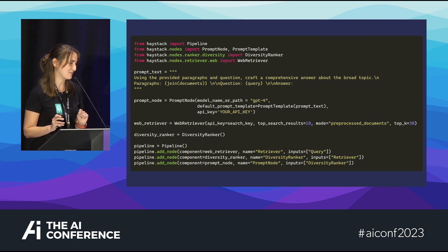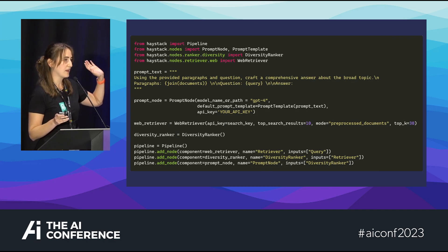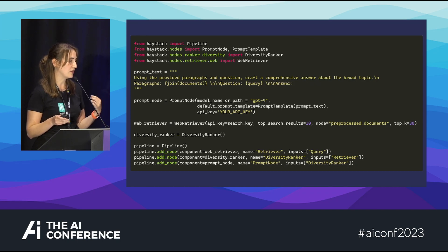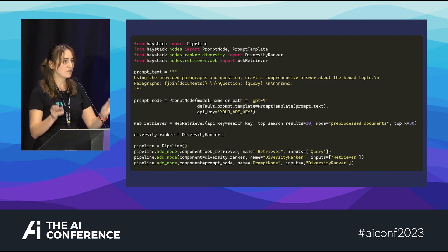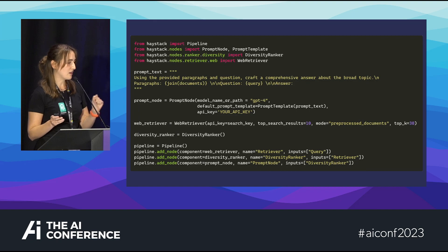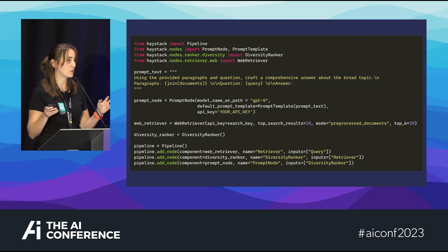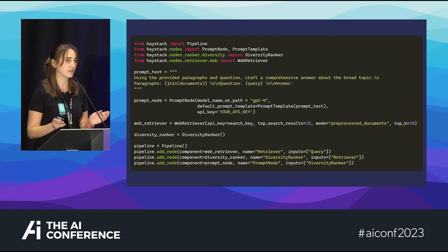This is the only code snippet I have. To use our diversity ranker in Haystack, you first initialize the various components. The prompt reads: using the provided paragraphs and question, craft a comprehensive answer about the broad topic — so we know we want a diverse set of documents. I've chosen GPT-4 via OpenAI directly for generation, and web search as the retrieval step — so whatever Google returns. Then I add a diversity ranker. In pipeline construction, the query first goes to the web retriever, then through the diversity ranker to reshuffle and ensure the LLM sees a diverse set of documents, and finally through a prompt node.